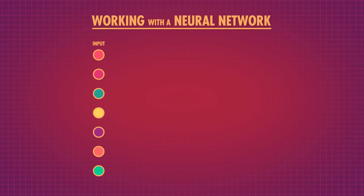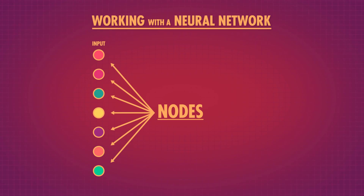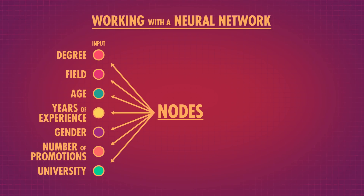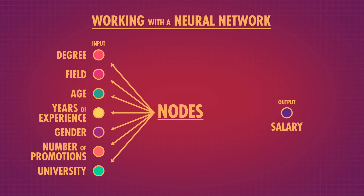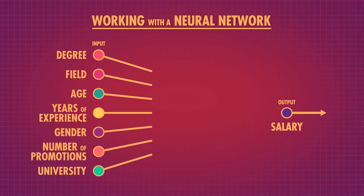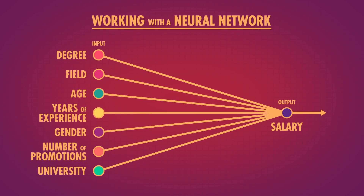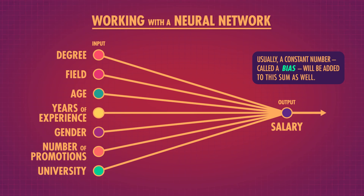If we want to work with data instead of toy cars, we can use a neural network to predict future salary based on a number of variables, like degree, field, age, years of experience, gender, number of promotions, and university. We feed these variables into the neural network. These circles are called nodes, and they just hold a value, like degree or field. Eventually, we want the neural network to output its prediction for future salary, so we know there will be one output node at the end of our network. At this point, the neural network looks kind of like a regression — we have a bunch of inputs, our variables, which are combined in some way to create an output, our predicted value.